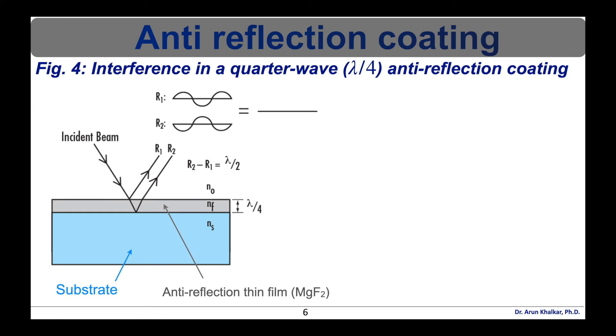When the light is incident on its surface, it will get reflected from its surface. Let's say R1 from the top surface of the anti-reflection coating and from the surface of the substrate, it will get reflected. Let's say the ray R2 as shown in this diagram. Now depending upon the wavelength, there is a constructive and destructive interference will be observed.